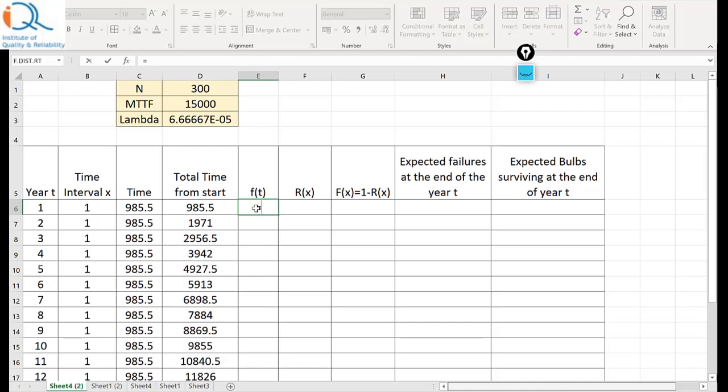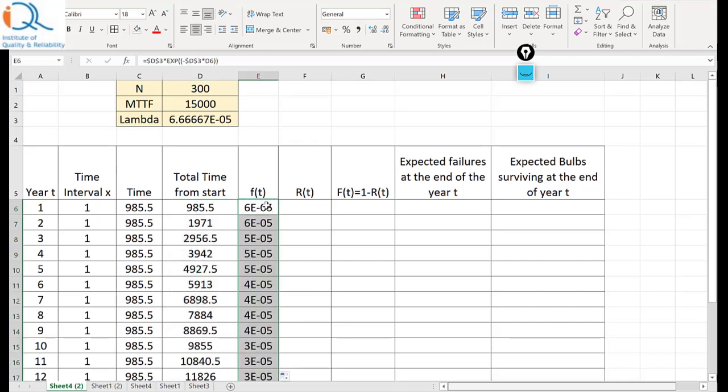The f of t will be given by lambda e to the power minus lambda t. So lambda I select dollar d dollar 3 and star exponential of again minus lambda t minus dollar d dollar 3 I type in into time is d6. So this should be and reliability at time I should say t not x. So reliability of time t and so I have calculated the total time from start here and f of t for the first I can also calculate for the remaining rows.